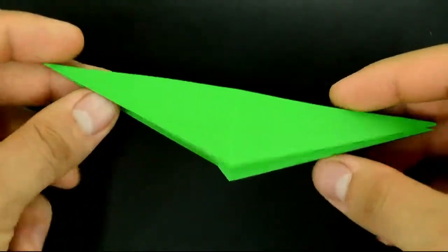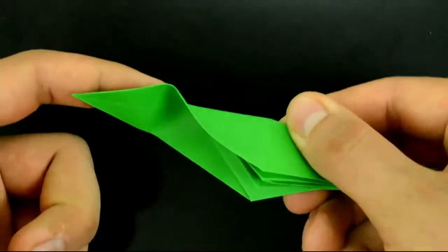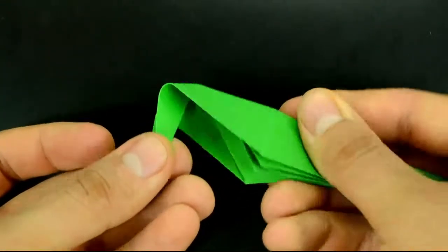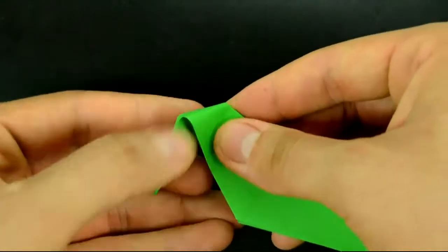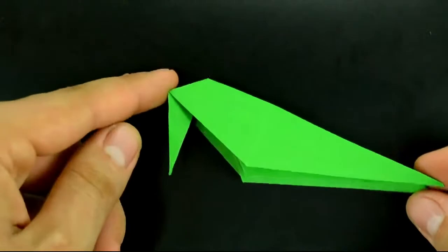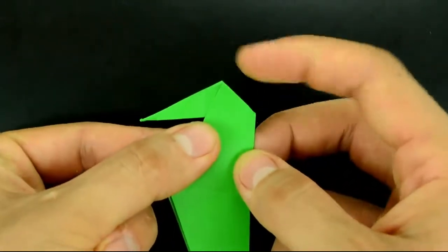Now let's make the head and beak. First, make a reverse fold on this tip. Rotate the paper in this position. Open this space.